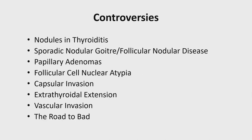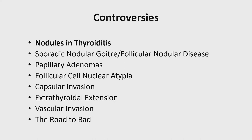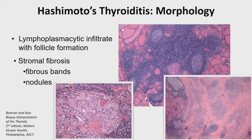In terms of the controversies I want to review, they're listed on this slide — some will go fairly quickly, others are pretty complex. Let's start with nodules and thyroiditis, which is actually one of the hardest parts of thyroid pathology. Hashimoto's thyroiditis is fairly common and causes significant changes in the thyroid, from focal lymphoplasmacytic aggregates to cytologic atypia and extensive fibrosis in very severe cases.